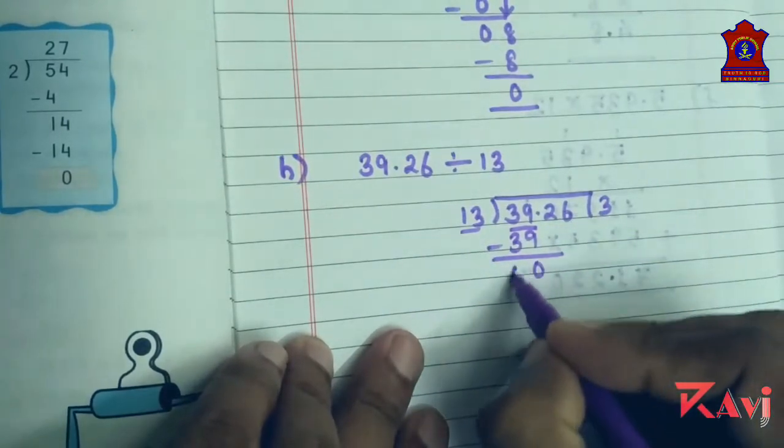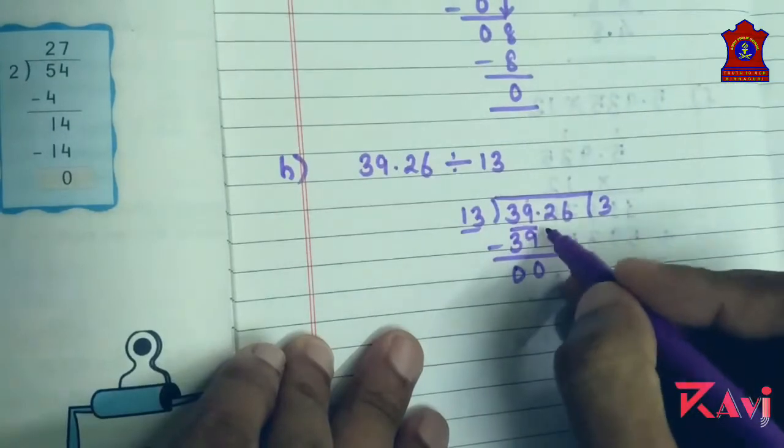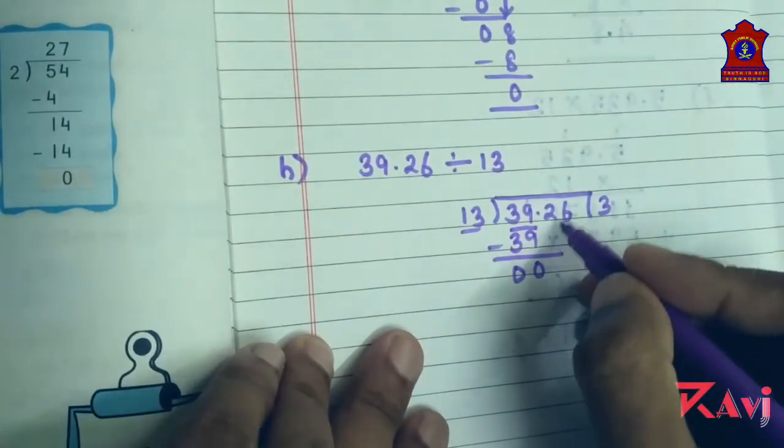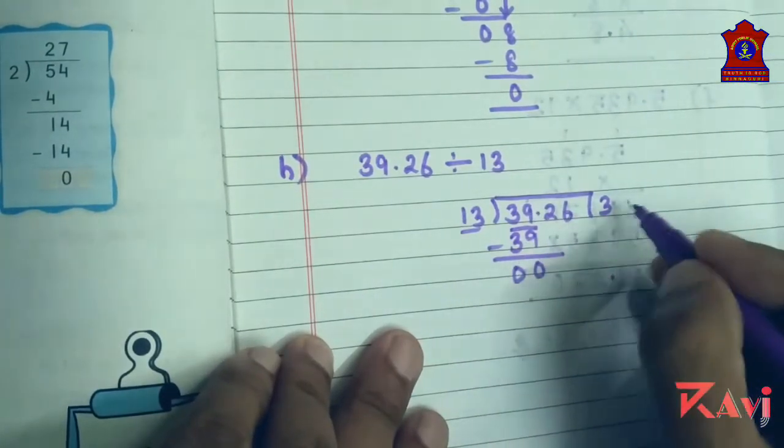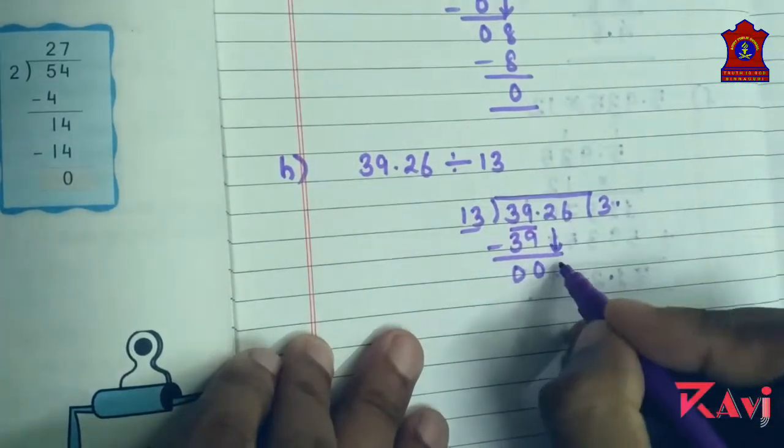Subtract, we have got 0. After 39 what will come down? 2. But before 2, what is there? There is a decimal, put a decimal. What comes down? 2.